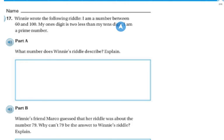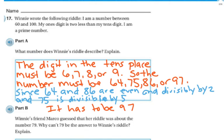Winnie wrote the following riddle: I'm a number between 60 and 100. My 1s digit is 2 less than my 10s digit. I am a prime number. What number does Winnie's riddle describe? The digit in the 10s place must be 6, 7, 8, or 9. So the number must be 64, 75, 86, or 97. But since 64 and 86 are even and divisible by 2, they can't be it. And since 75 is divisible by 5, it can't be it. So the answer has to be 97.